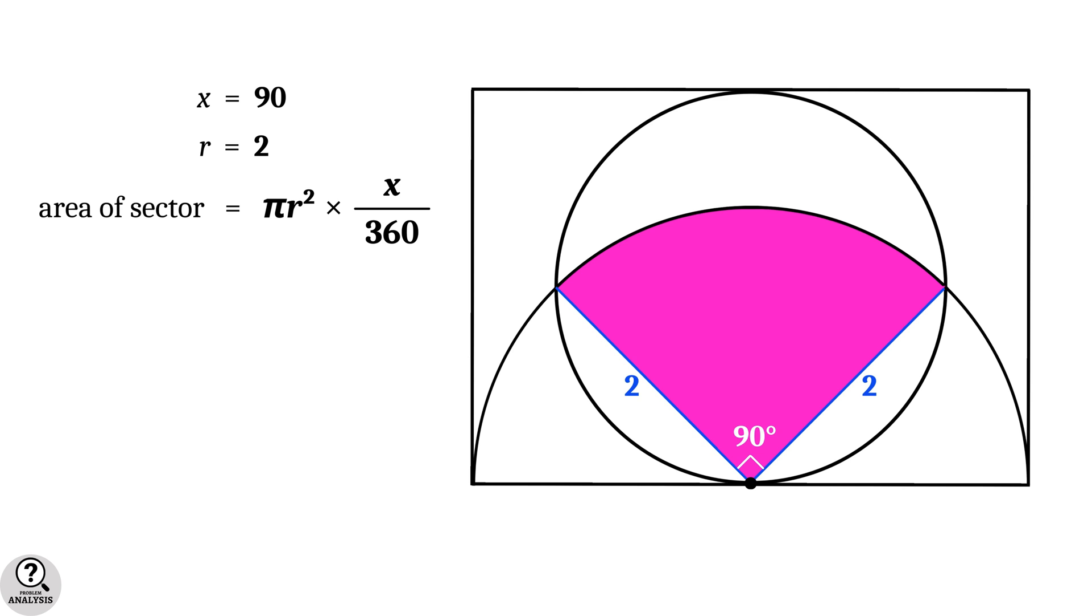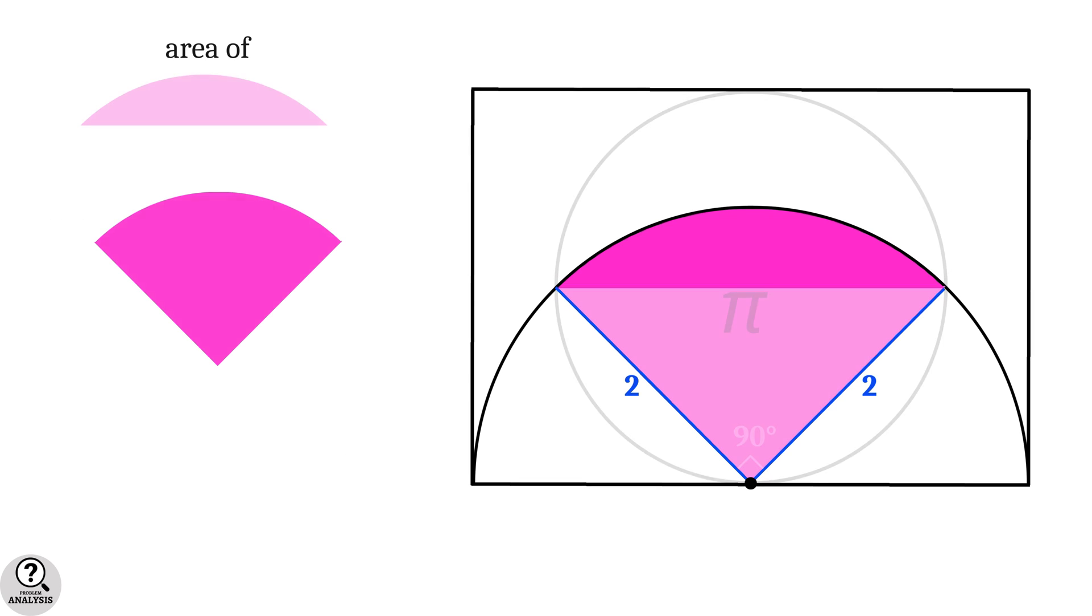Now substitute in the formula. It gives area of sector is π × 2² × (90/360) equals 4π × (1/4), that is equal to π square units. So in our equation, the area of sector is π.